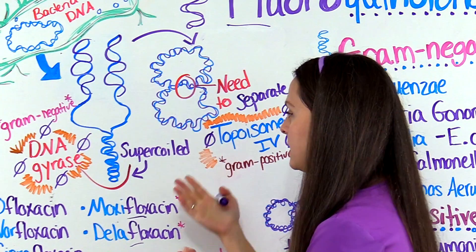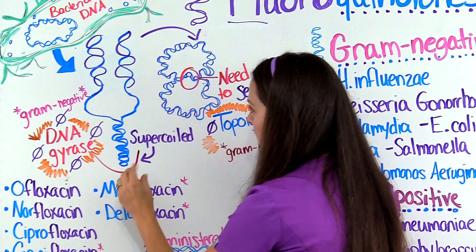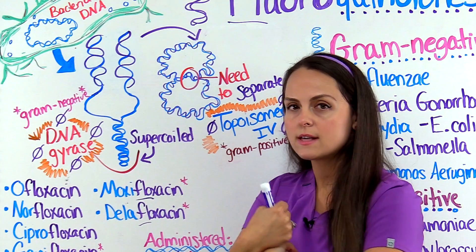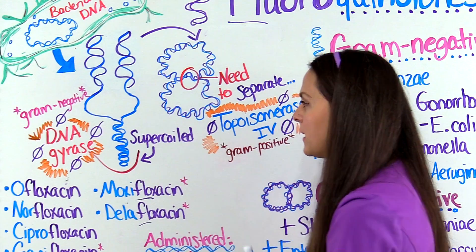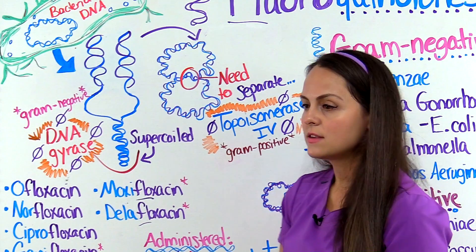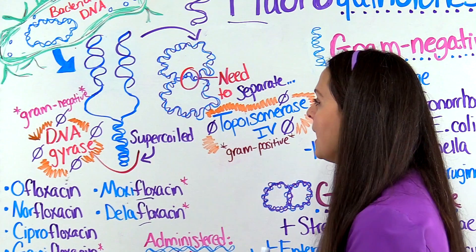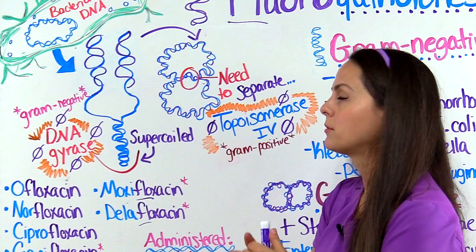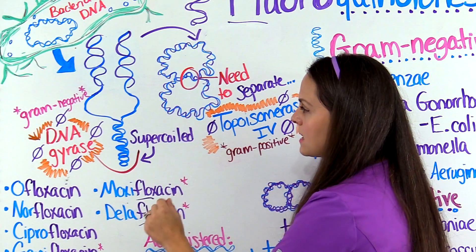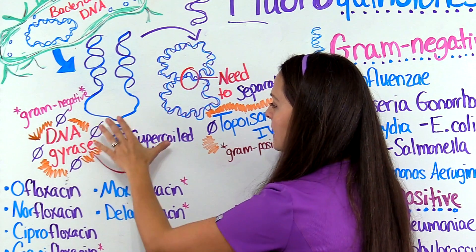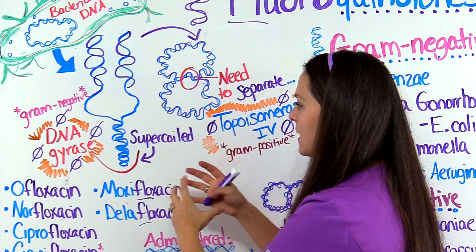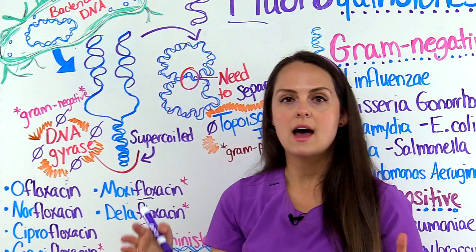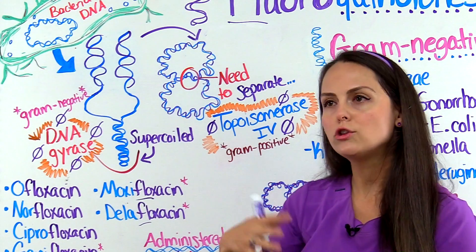As this happens, the other part of the strand that wasn't separated starts to get tightly wound around itself — we call this becoming supercoiled. We need to alleviate this supercoiling because we need these parts to fold over so we can continue the replication process. An enzyme called DNA gyrase comes in to alleviate this tightness by slicing and reconnecting parts of the strand, loosening it up.